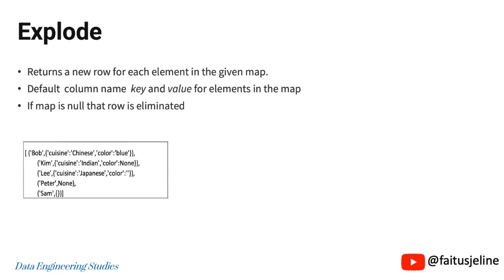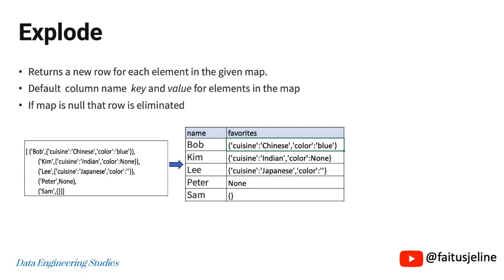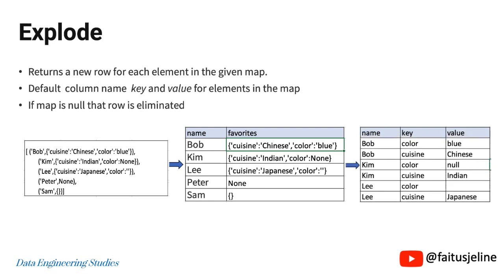Let's take an example of a dataset which has names and their favorites. The favorites are in map data type, containing their favorite cuisine and favorite color in key-value pairs. One of the names, Peter, doesn't have a favorite. If we create a dataframe, we get two columns: name in string type and favorites in map type. When we pass favorites to the Explode function, it returns new rows for each element of the map, with two new columns: key and value. For Peter and Sam, the favorites are none and blank respectively, so the Explode function won't return those two records.